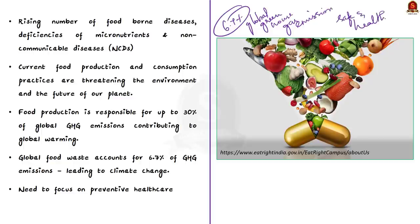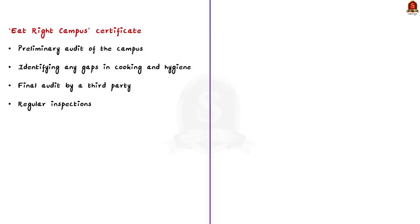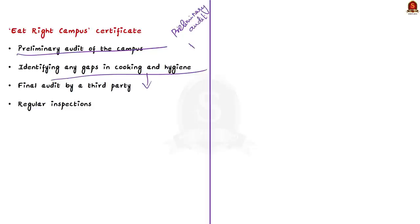To receive the Eat Right Campus certificate, the program mandates a preliminary audit of the campus to identify any gaps in cooking and hygiene. Subsequently, a final audit by a third party is conducted before a certificate is handed out, which has a validity of two years. Regular inspections are carried out by the food safety department or auditing agencies during those two years to keep a check on food quality until the certificate is renewed.